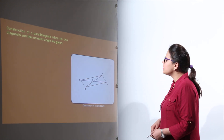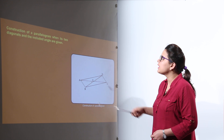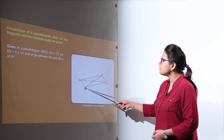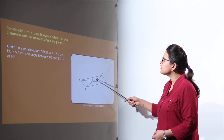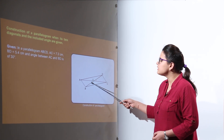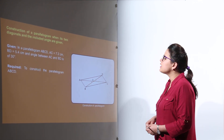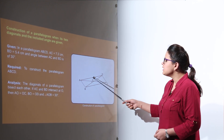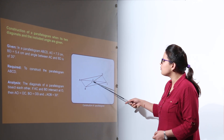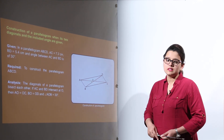The next case is the construction of a parallelogram when the two diagonals and the included angle are given. Here we are given parallelogram ABCD to be constructed with diagonal AC, diagonal BD, and the angle between AC and BD equal to 30 degrees. The angle between the two diagonals can be either of two possible angles. The analysis is that the diagonals of a parallelogram bisect each other, so OB equals OD, OA equals OC, and the angle AOB equals 30 degrees.